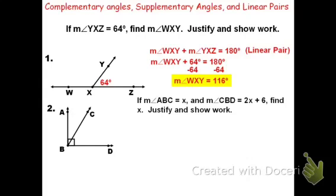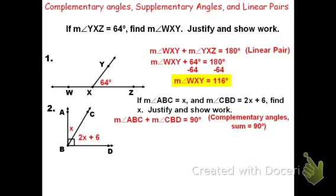Now look at problem 2 and figure out what type of angle relationship these two angles are. Hopefully you said they're complementary angles. The box at the corner tells us that the two angles together make 90 degrees. Angles that add to 90 degrees are complementary. You can't say angle B since there are two angles at B, so use the three-letter name. The acute angle on top is angle ABC and the other angle below is angle CBD. So we say the measure of angle ABC plus the measure of angle CBD equals 90 degrees, because complementary angles have a sum of 90 degrees — that's our justification.